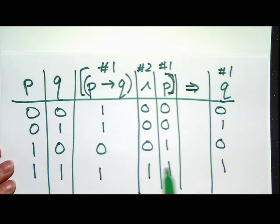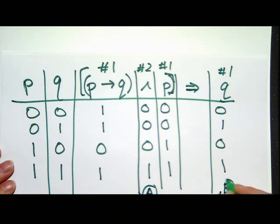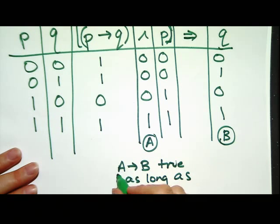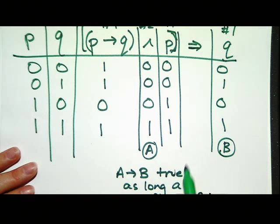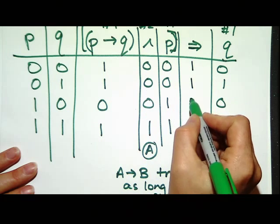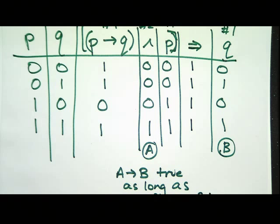We want to check: does the left side (call it A = P implies Q, ANDed with P) imply the right side (call it B = Q)? A implies B: row one, 0 implies 0 — true. Row two, 0 implies 1 — true. Row three, 0 implies 0 — true. Row four, 1 implies 1 — true. All ones underneath, so this is a logical implication. This kind of truth table compares two sides: does knowing the left guarantee the right in every case?